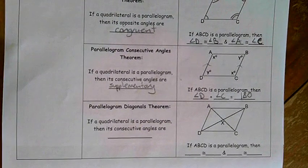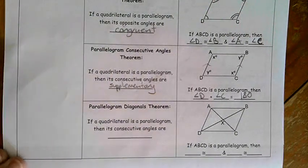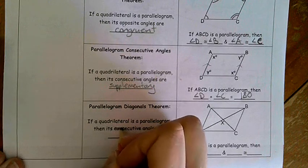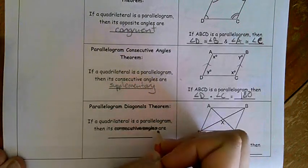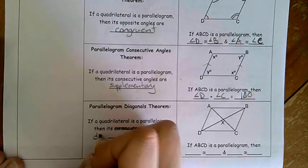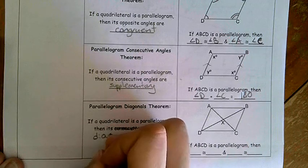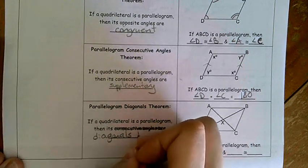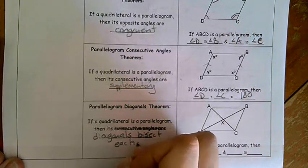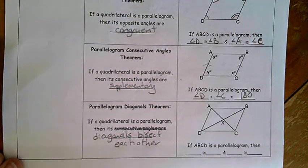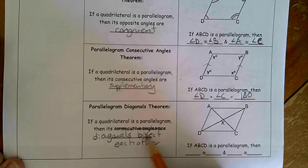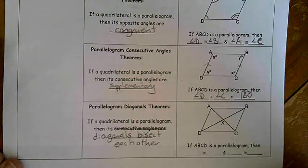And then the last theorem on our list for parallelograms for today is, if a quadrilateral is a parallelogram, then, and this is where we need to change this a little bit because I had a typo before I printed these. So it should say, then its diagonals bisect each other. Its diagonals bisect each other. Remember, bisect, bi, two sections, what's special about them? They're congruent.